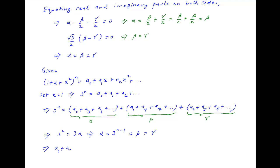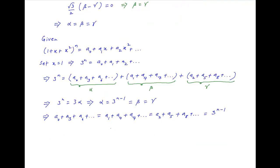Therefore, a0 plus a3 plus a6 plus and so on, which is equal to alpha, is equal to a1 plus a4 plus a7 plus and so on, which is equal to beta, is equal to a2 plus a5 plus a8 plus and so on, which is equal to gamma, and all three are equal to 3 raised to power n minus 1, which is the required result.